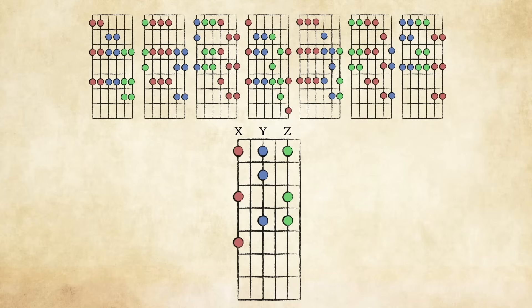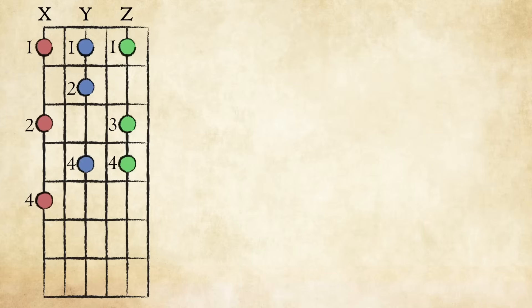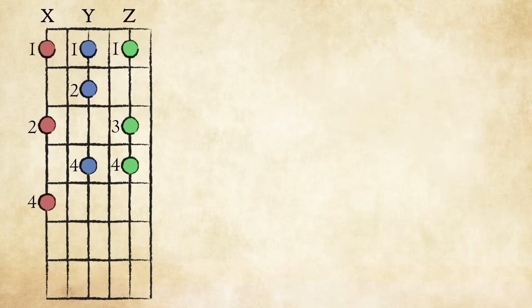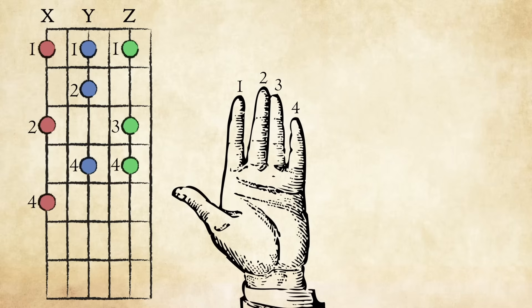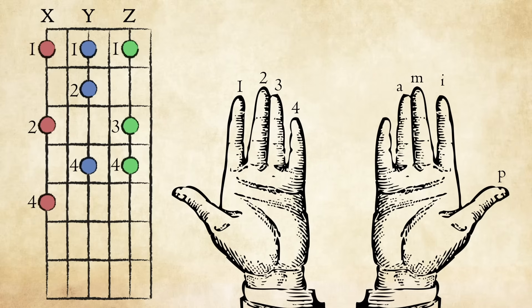These shapes are the basis from which we'll construct all of our larger scale patterns. Notice that they use three fingers on each string for left-hand consistency. This ensures that we don't have any awkward shifts when moving from one string to the next. This left-hand consistency also translates into right-hand consistency for classical guitarists, since we now have a predictable repeating right-hand pattern of I-M-I-M-I-M.